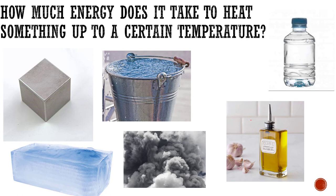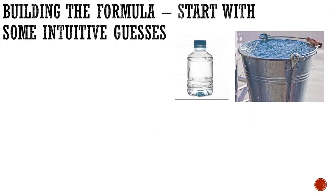We're going to look at different objects and see how much energy it takes to heat them up to a certain temperature. Let's say we had two objects — a bottle of water and a pail of water. Let's say I gave each of them one unit of energy, represented by a single arrow. Which one of these objects will have a higher temperature after feeding them both one unit of heat? In your mind, you may guess it's going to be the bottle of water.